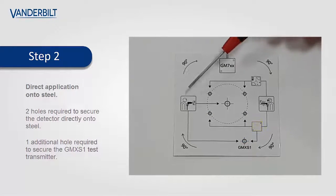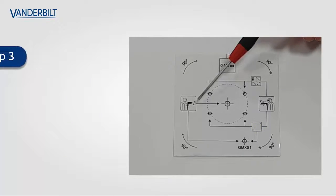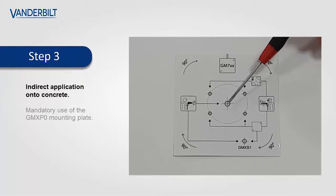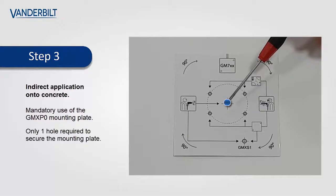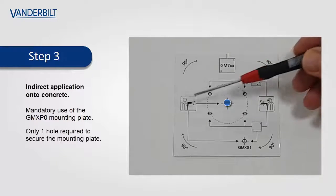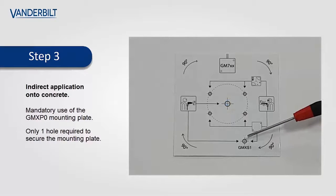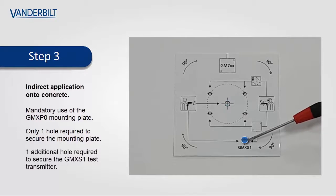For the concrete application, we drill one large center hole which secures the GMX-P0 mounting plate, which is required for all concrete applications. Once again we follow the lines and we see the GMX-S1, and we drill the second hole for the GMX-S1.